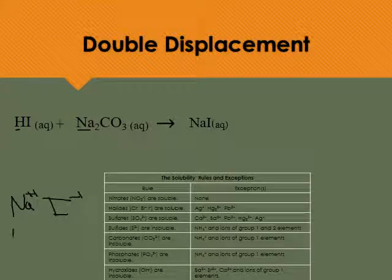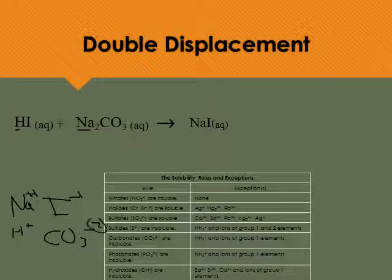Second thing we're going to create is we're going to put the hydrogen that's plus 1 together with the carbonate that is minus 2. You'll notice that we are going to end up with two hydrogens and one carbonate.